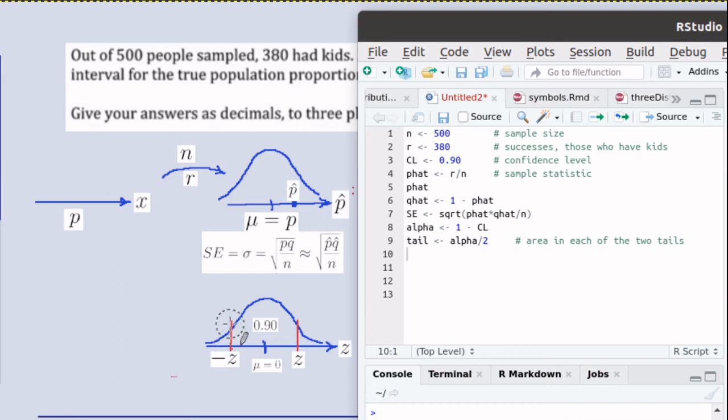Then the area in either one of these tails - they're symmetrical, they're exactly the same size, they're just mirror images of each other - and so since alpha was the sum of the two, then the one tail will be alpha divided by two. So we have the machinery built to be able to find out what this z value is.